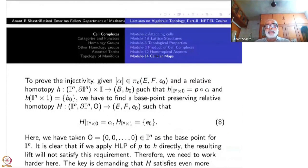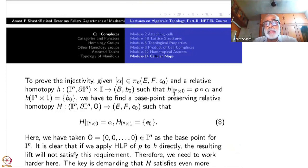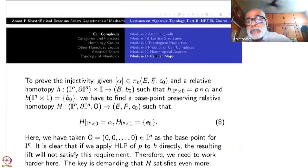Now we prove injectivity. Start with an element alpha in pi_n(E, F, E_0) and a relative homotopy of alpha to a single point when we pass to the base space B. So H is a homotopy from I^n cross boundary I^n cross I to (B, B_0) such that H restricted to I^n cross 0 is p of alpha and H of I^n cross 1 is B_0. This means p composite alpha is null homotopic in B, i.e., trivial in pi_n(E, B). We want to show alpha is trivial in pi_n(E, F) itself.